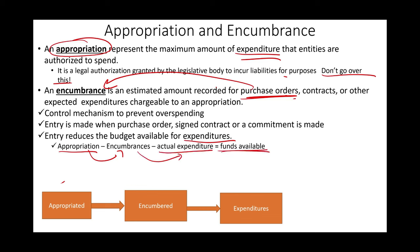Let's talk more about encumbrances. In the Crime Laboratory example, they had $220,000 of unencumbered balance. When they ordered a blood test machine for $15,000, they encumbered that amount — it prevents someone else from spending the money and prevents overspending the budget. It's a control mechanism. An entry to record encumbrance is made when the purchase order is issued, a contract is signed, or a commitment is made — even before receiving the goods. The entry reduces the budget available for expenditure. Outstanding encumbrances are reported at the end of the year in the notes to the financial statements.